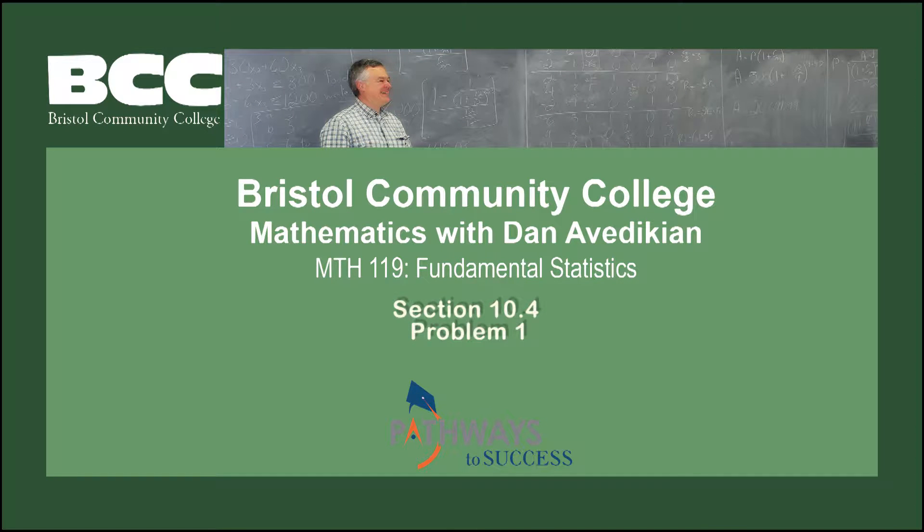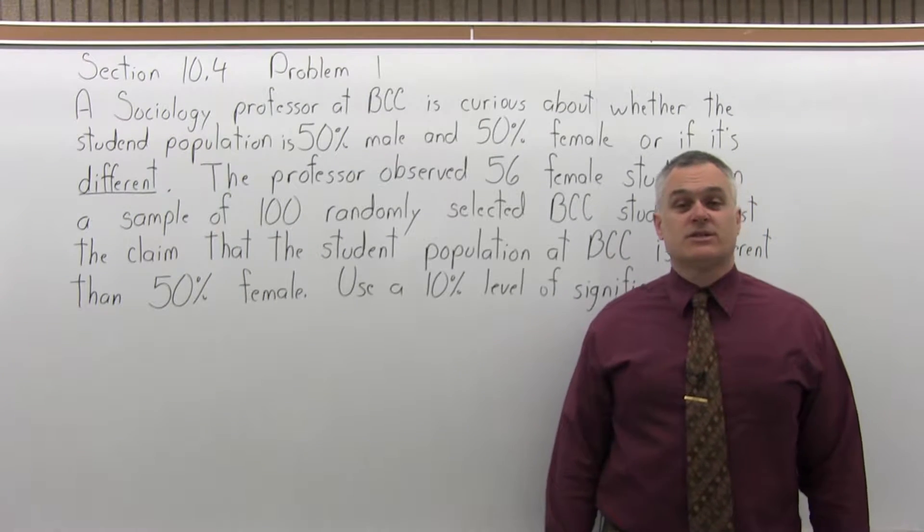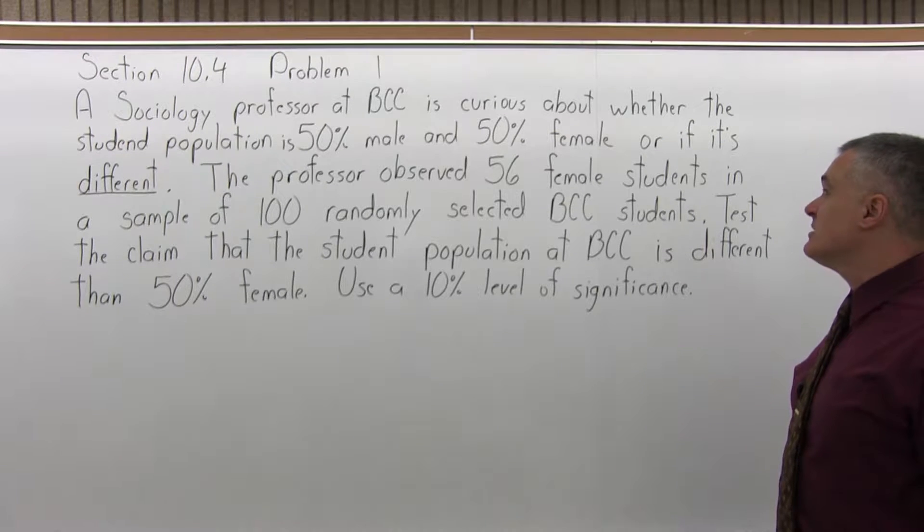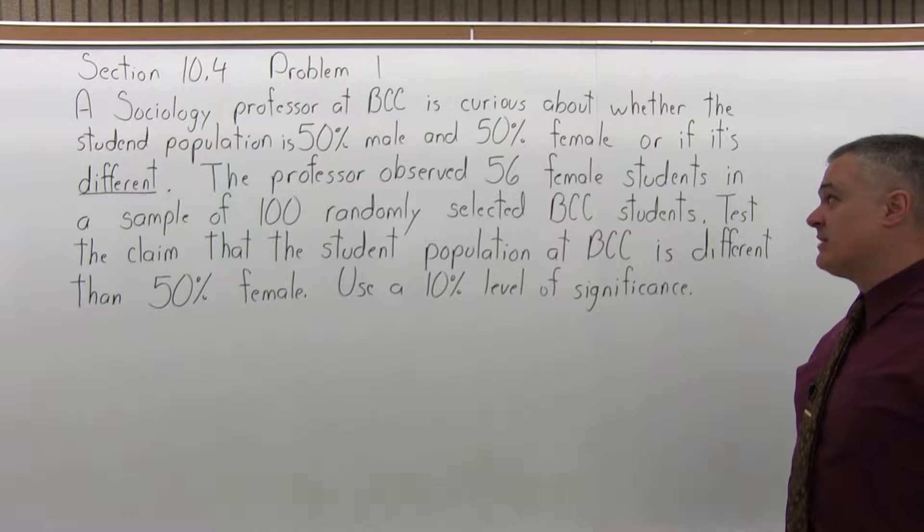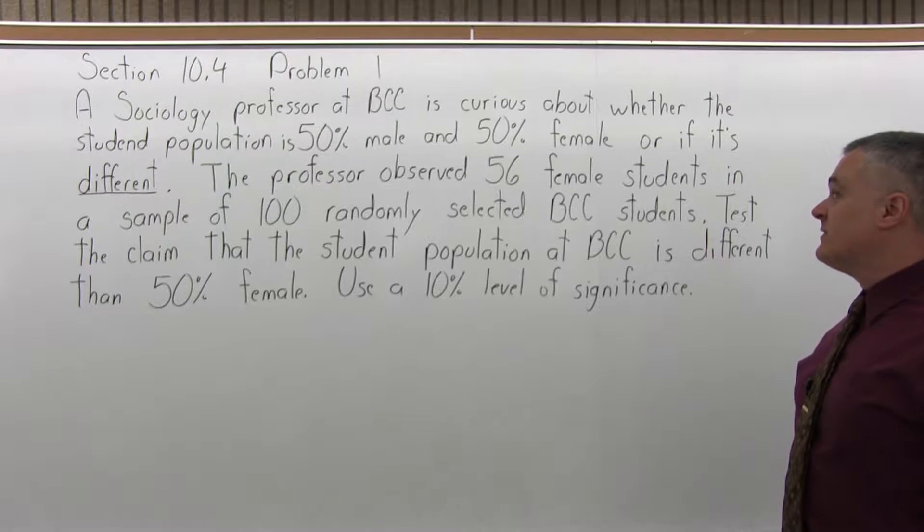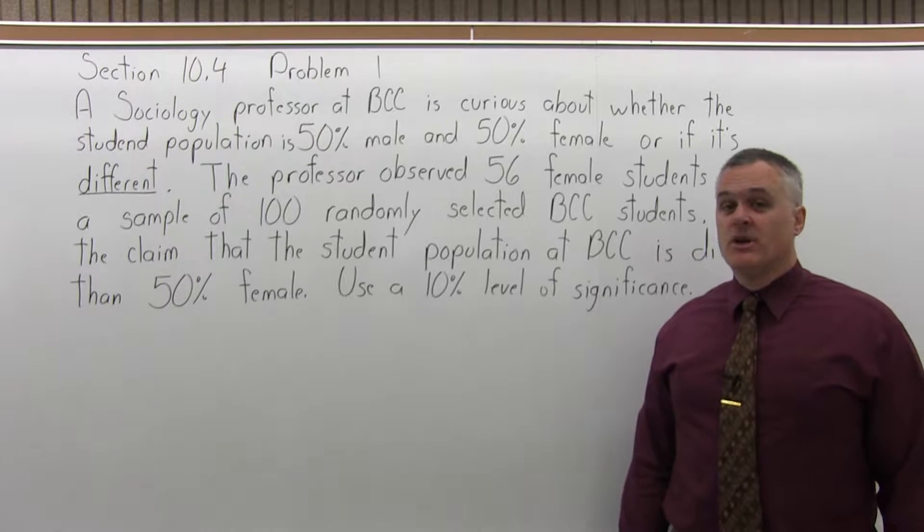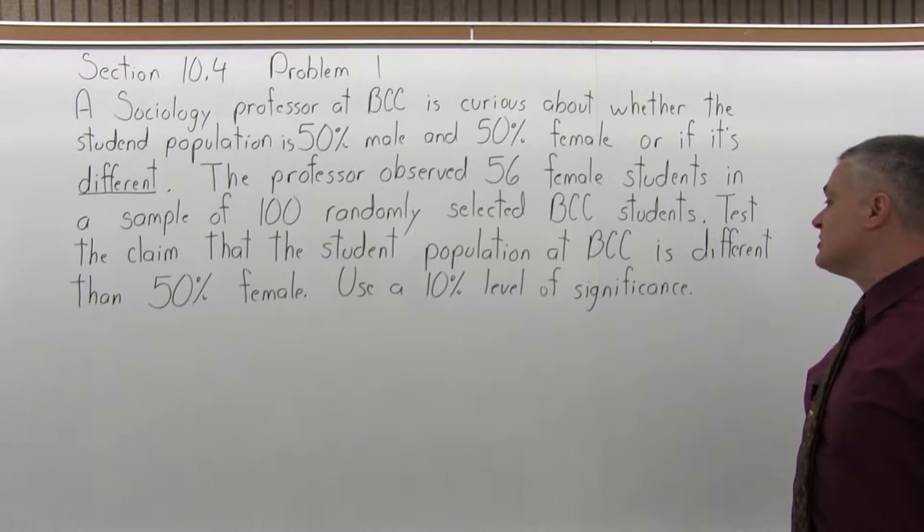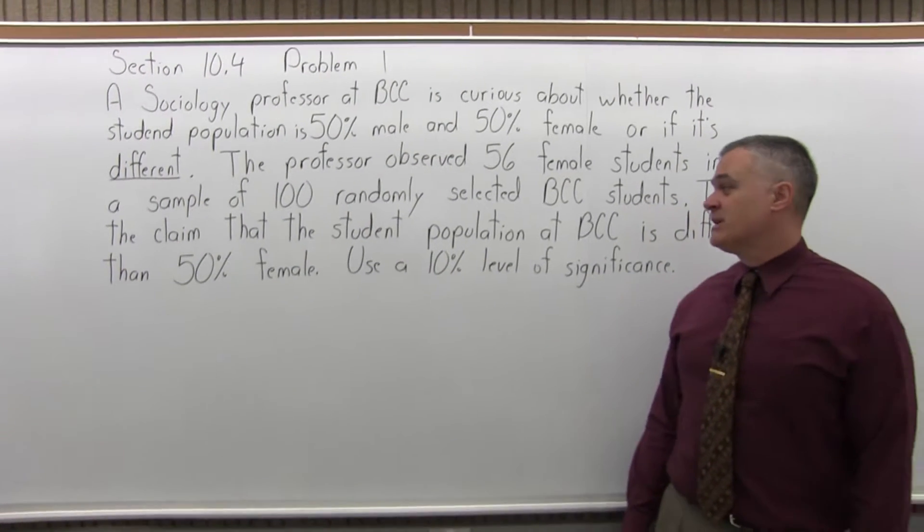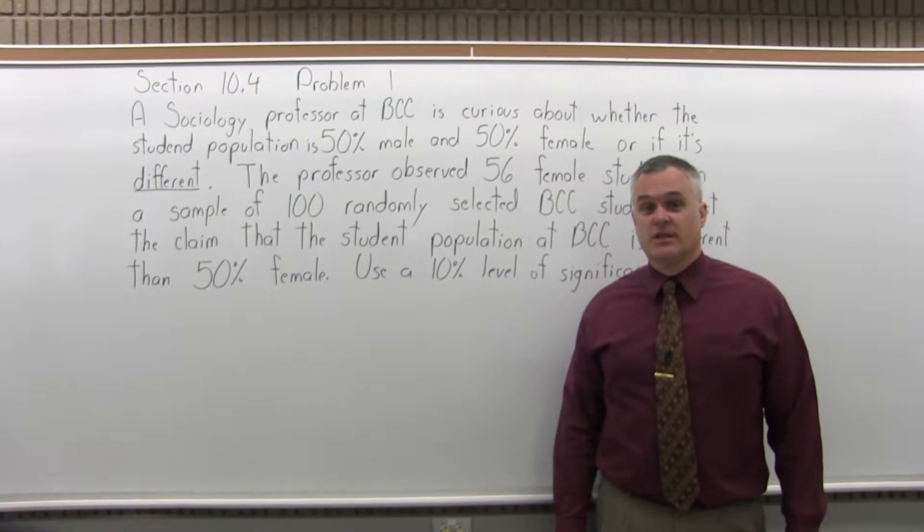Bristol Community College, Mathematics with Dan Avedikian, Math 119, Fundamental Statistics, Section 10.4, Problem 1. A sociology professor at BCC is curious about whether the student population is 50% male and 50% female, or if it's different. The professor observed 56 female students in a sample of 100 randomly selected BCC students. Test the claim that the student population at BCC is different than 50% female. Use a 10% level of significance.